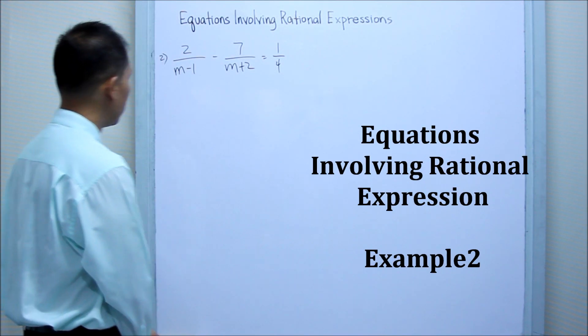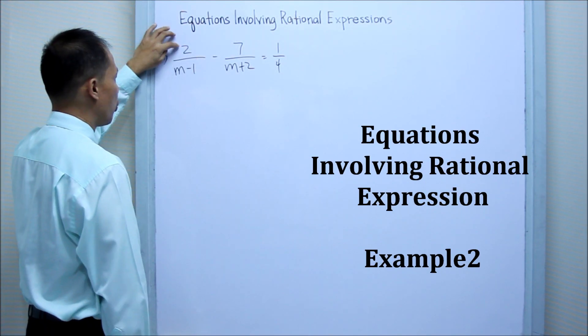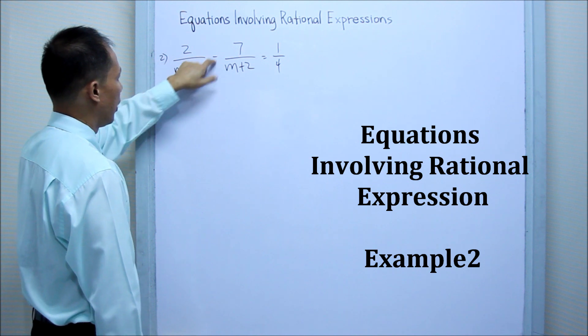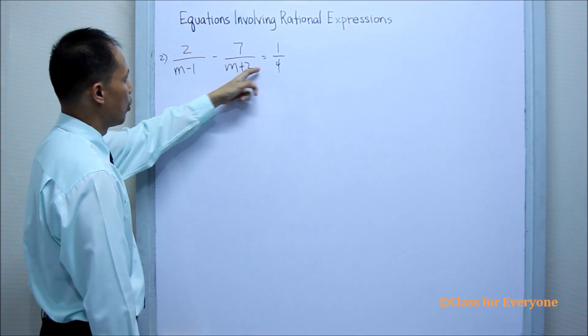Let us have another example wherein the equation will be 2 over m minus 1 minus 7 over m plus 2 equals 1 fourth.